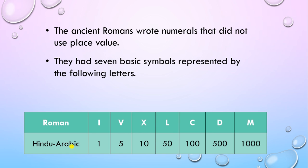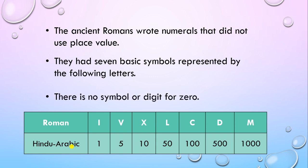100 is represented by C, 500 is represented by D, and 1000 is represented by M. There is no symbol or digit for 0.